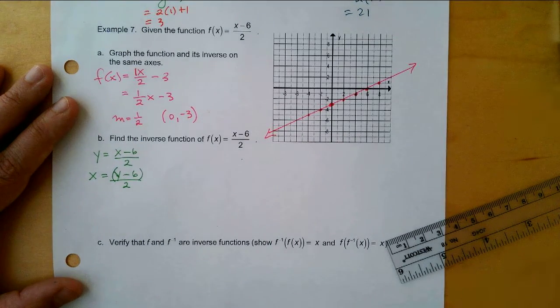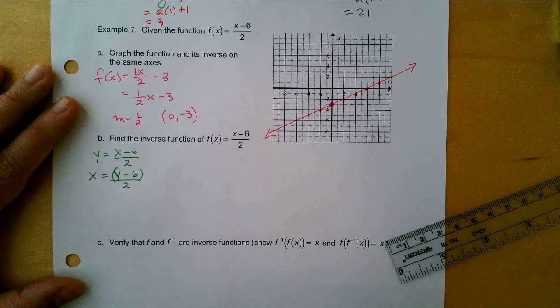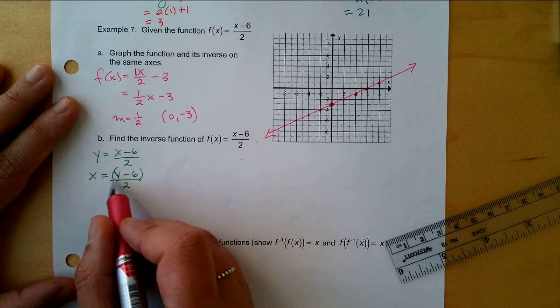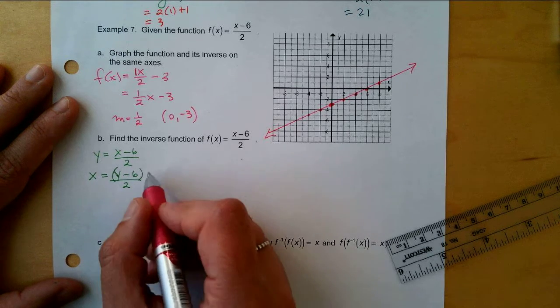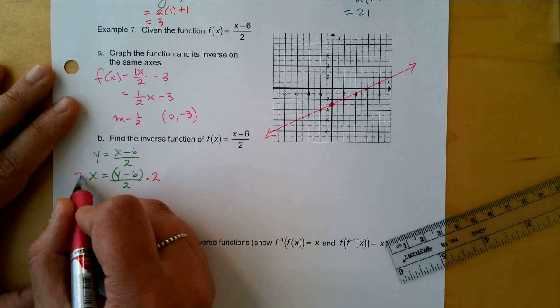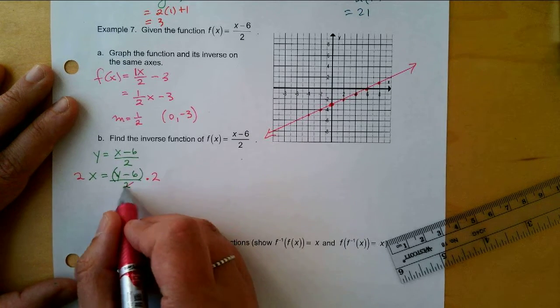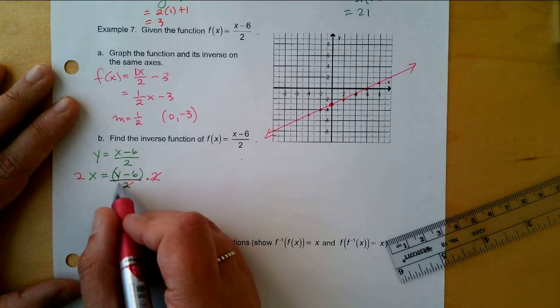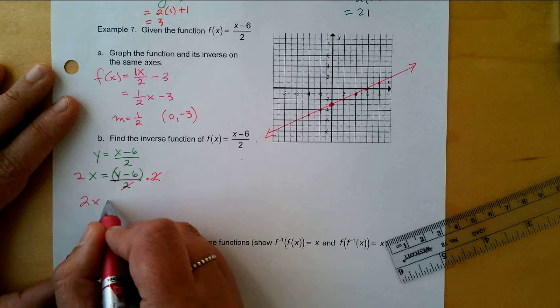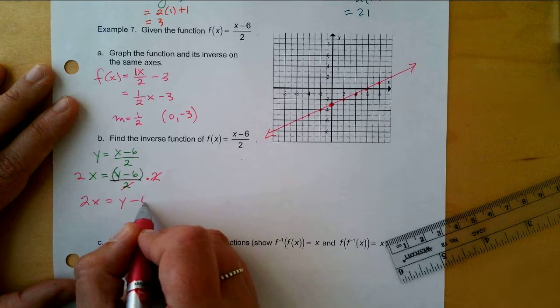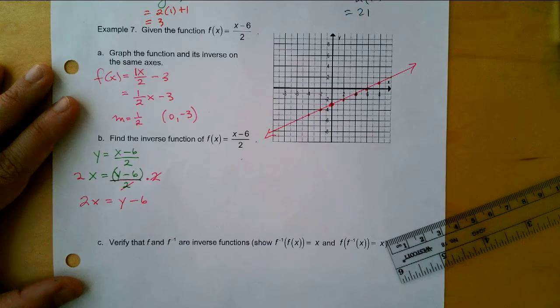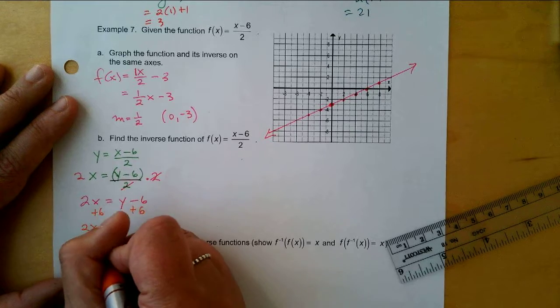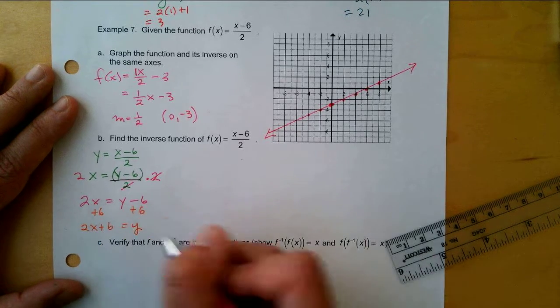I could have started with the other version where I had it in slope-intercept form; I would get the same thing. But one thing to realize here is if I want to get rid of divide by 2, both of these things are being divided by 2, so what's the opposite of dividing by 2? If I multiply both sides by 2 here, they cancel. So I get 2x equals y minus 6. And now what? Add 6 to both sides. I get 2x plus 6 equals y.